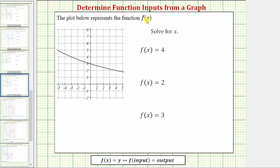The plot below represents the function f of x, and we're asked to solve for x. We're given three function values or function outputs, and therefore we're solving for x, which means we're determining the function input that gives the provided function value or function output.